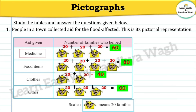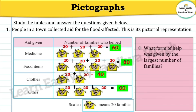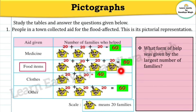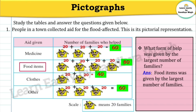Now our next question: What form of help was given by the largest number of families? Medicines: 60 families. Food items: 80 families. Clothes: 40 families. Other items: 60 families. So our answer will be: Food items was given by the largest number of families.